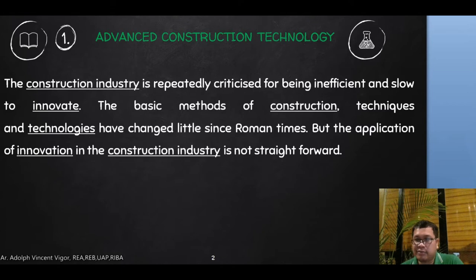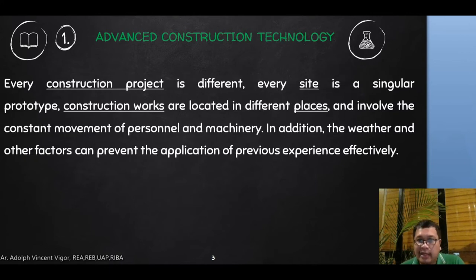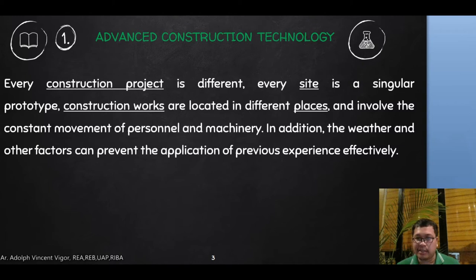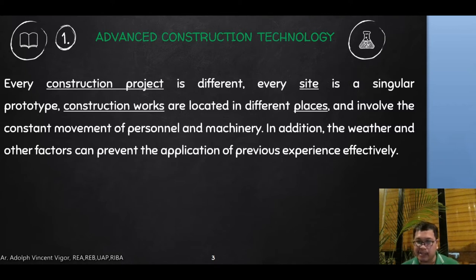That is why it is important for us to adapt new technologies and new trends so we can be more efficient and build better infrastructure for our nation. Every construction project is different — every site is a singular prototype. Construction works are located in different places and involve the constant movement of personnel and machinery. Weather and other factors can prevent effective application of previous experience. Each project is unique because factors such as topography, material sourcing, weather conditions, and soil conditions differ from site to site.